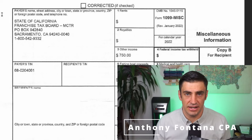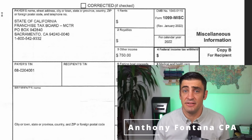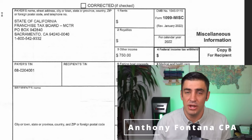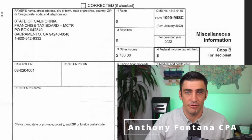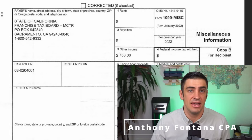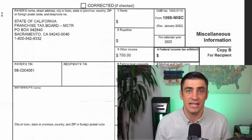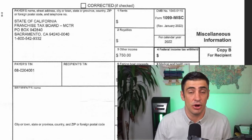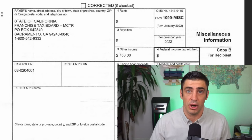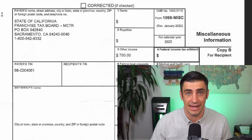This is a 1099 from the state of California that you received based on what they call the Middle Class Tax Refund. You should have received this sometime from October to the end of the year. This came as either a debit card in the mail or it was a direct deposit into your bank account.